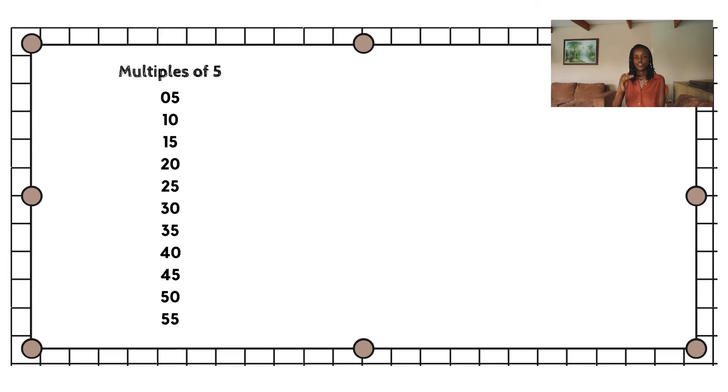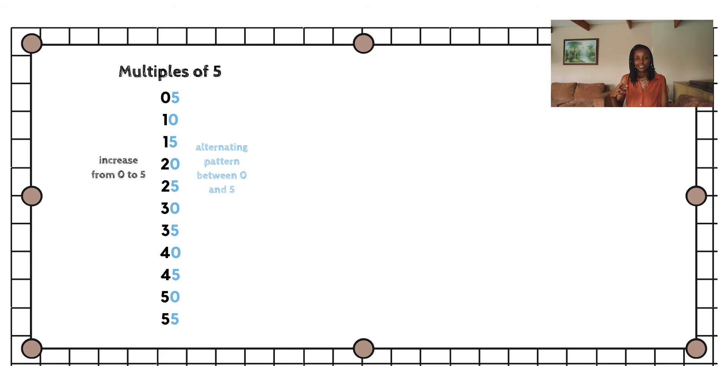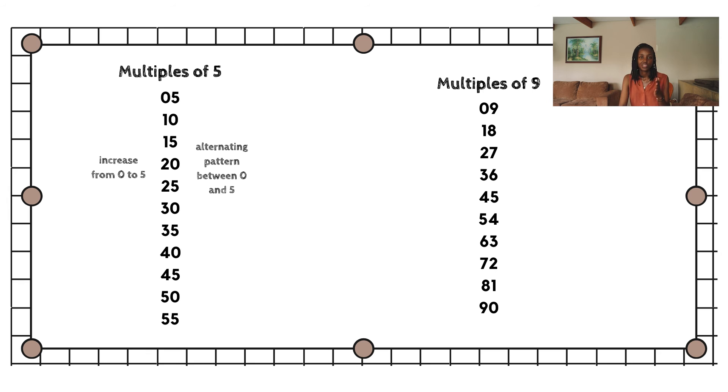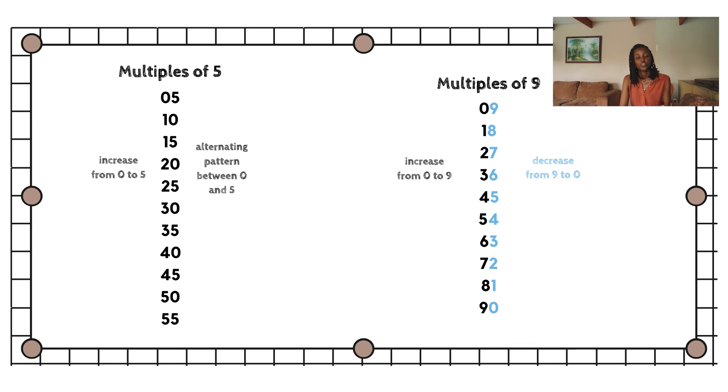Now let's discuss a few shortcuts that should only be used by children who are skilled in finding timetables. One of the best ways to remember multiples is by finding an observable pattern in a list of multiples. For example, with the multiples of 5, all the digits on the left increase from 0 and the digits on the right alternate between 0 and 5. Another example is the multiples of 9 — as you can see on the screen, the digits on the left increase from 0 to 9 while the digits on the right decrease from 9 to 0. If a child keeps these patterns in mind, they can easily compile the multiples of 9.